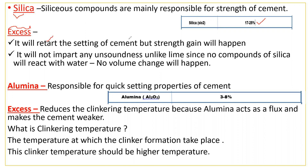In upcoming lectures we'll see what is the initial setting time and final setting time of cement. Usually the initial setting time should not be less than 30 minutes — once we prepare a cement paste or concrete, it should take more than 30 minutes to start gaining strength. If you add more silica, it will retard setting, so cement that would set by 45 or 50 minutes may go up to one or two hours.